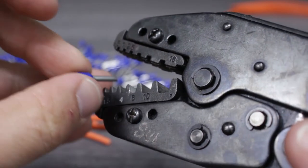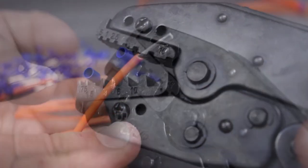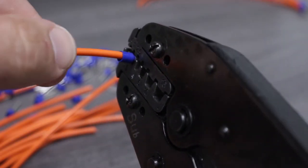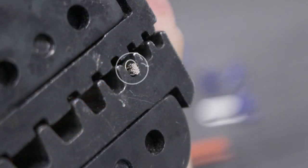We'll place the correctly sized ferrule into the proper crimp nest of our specialty tool. Now, we'll insert the wire making sure that the insulation of the wire butts up to the barrel of the wire ferrule and that the conductors end at the tip of the ferrule.